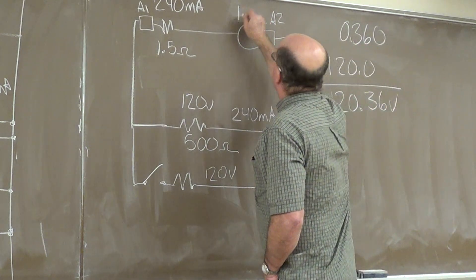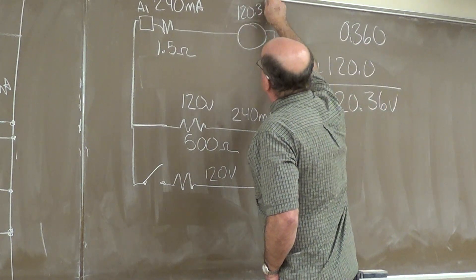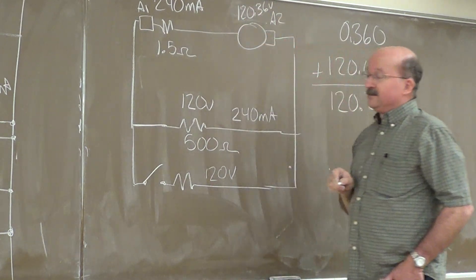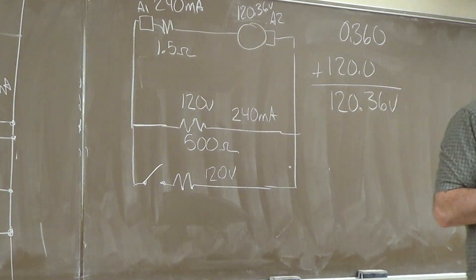We're at 120.36 volts. That is our no-load voltage. That's our saturated voltage on our generator. Our output voltage will just go down from there with our shunt generator.